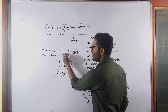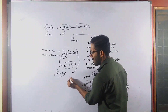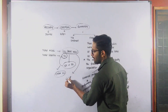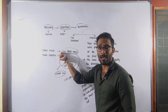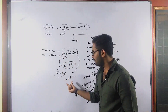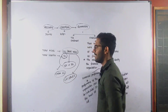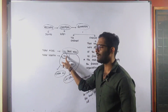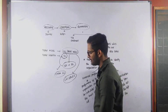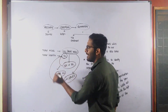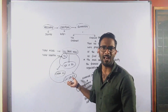Now suppose the same 10 lakh rupees book value of assets, when sold, we receive only 5 lakh rupees. The sale price of assets is 5 lakh rupees, and the total liabilities to be settled are 6 lakhs. In this case, sufficient funds are not available to settle the liabilities.